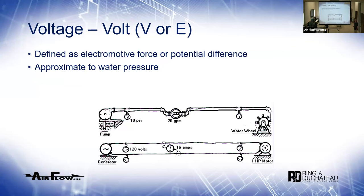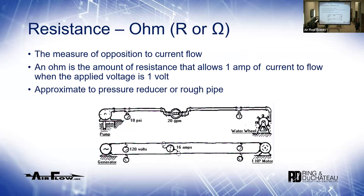Voltage is equal to pressure in a system. What is the pressure of the water in the pipe? Is it 120 volts? Is it 480 volts? Is it 277? In Europe it's 380, 384, whatever — it's the same concept, the physical parameter. Another one is ohms, or resistance — resistance to flow is basically the basic point.